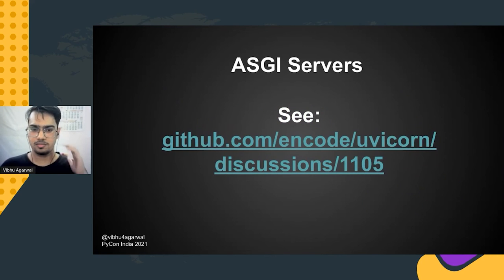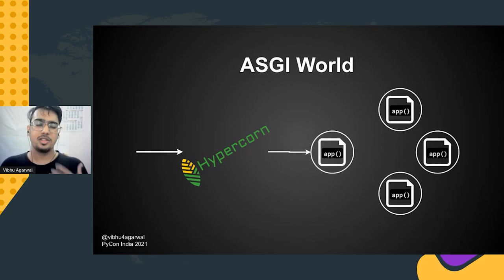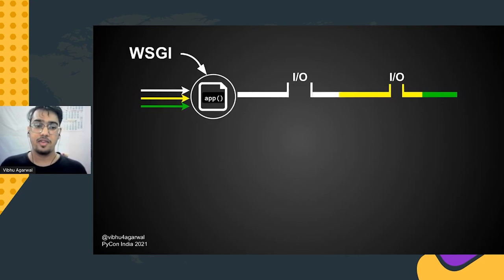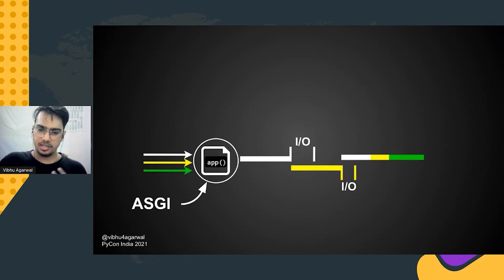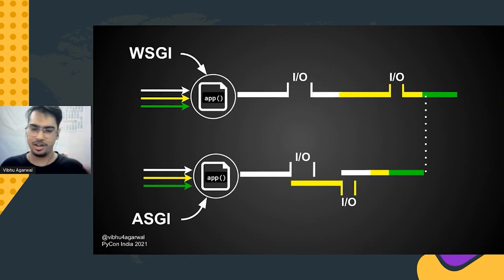A request arrives, the web server handles it, takes one of the processes, and executes the script — just like WSGI. But the main difference is that ASGI is asynchronous. With WSGI, if multiple requests arrive, requests get scheduled serially even if one goes for an IO-bound operation. With ASGI, if multiple requests arrive and one goes for an IO-bound operation, another request can be scheduled in that time — giving better response times for most requests and saving overall time. Performance boost.